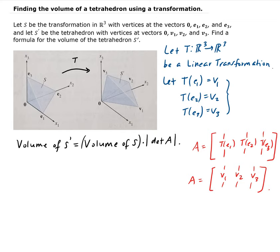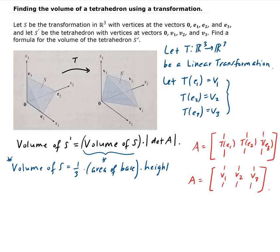Now we have to find the volume of S. S is a tetrahedron, so the volume of a tetrahedron is 1/3 times the area of the base times the height. The base of this tetrahedron is a triangle. The length from 0 to e1 is 1, from 0 to e2 is 1, and from 0 to e3 is also 1. So the base is a triangle.